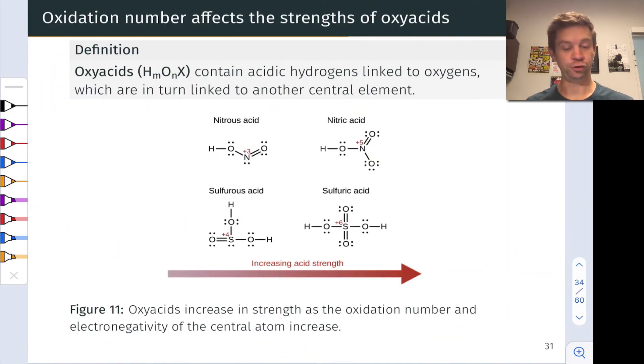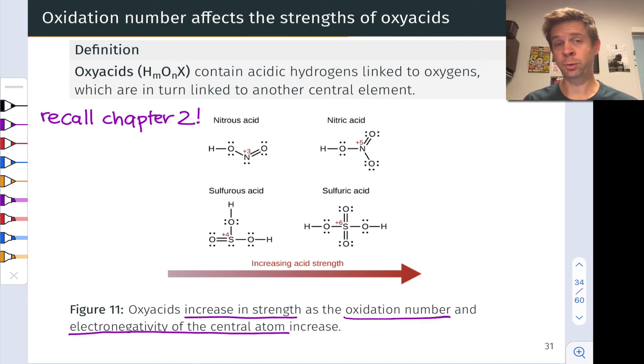Oxyacids are compounds with the general formula HMONX with some central atom X surrounded by oxygens or hydroxyl OH groups. And the relative strengths of oxyacids are associated with a couple of structural factors as well. So we saw these compounds back in chapter two, and in thinking about their relative strength, there are two things to consider. The first is something that we saw with the binary acids as well, the electronegativity of the central atom. As that central atom gets more electronegative, for example, in going from phosphorus to sulfur, the oxyacid gets stronger.